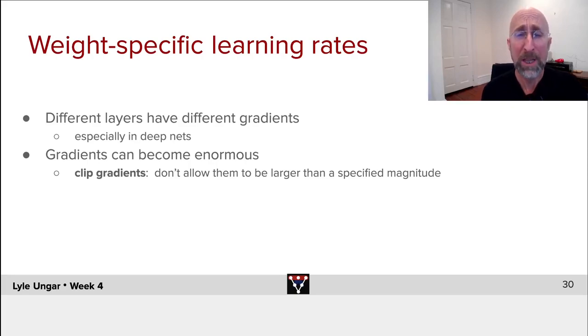Sometimes they also truncate the bottom side. If it's smaller than 10 to the minus 4, set it to 10 to the minus 4 in absolute value. So we don't want to have enormously big gradients; they can lead to instabilities.